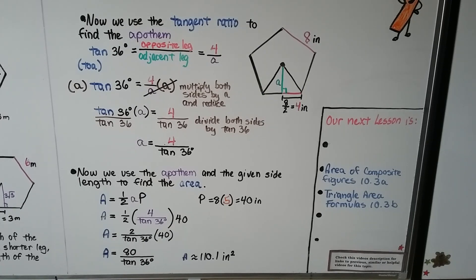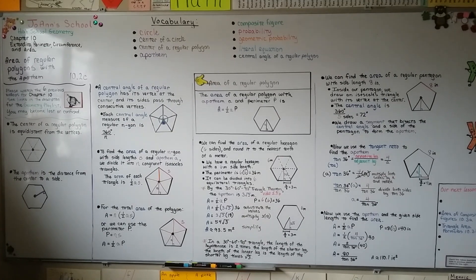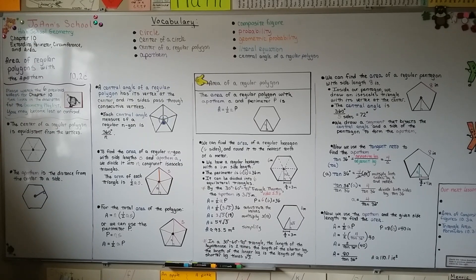Our next video is going to be the area of composite figures — that's 10.3a — and we'll talk about triangle area formulas in 10.3b. You should now understand how to work with an apothem. If you're a little rusty on tangent ratios, go back and watch the video from 8.2a and 8.2b where we talked about sine, cosine, and tangents. Hope you have a great day and I'll see you next video!